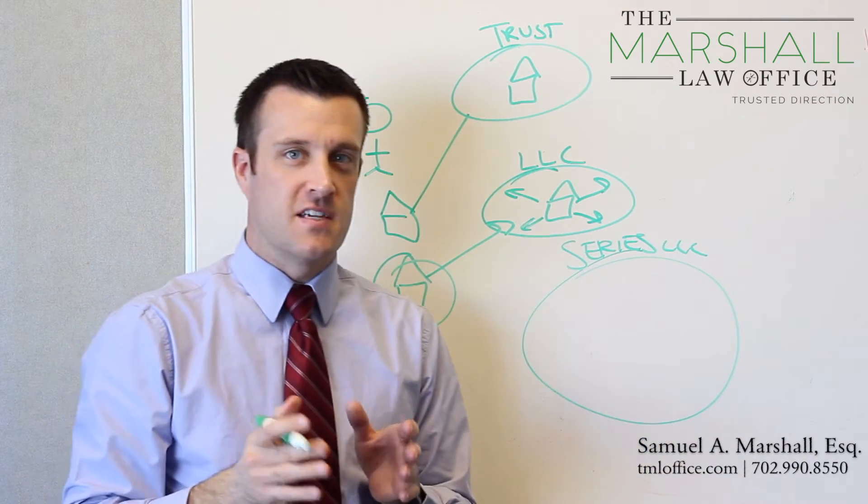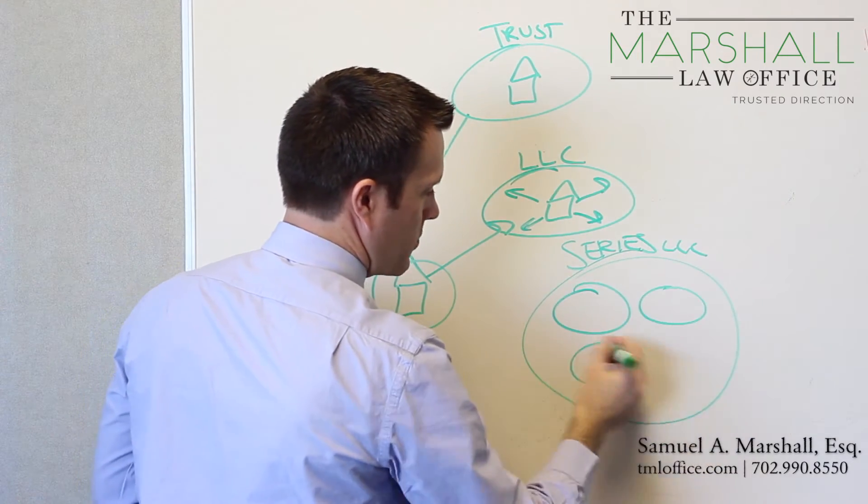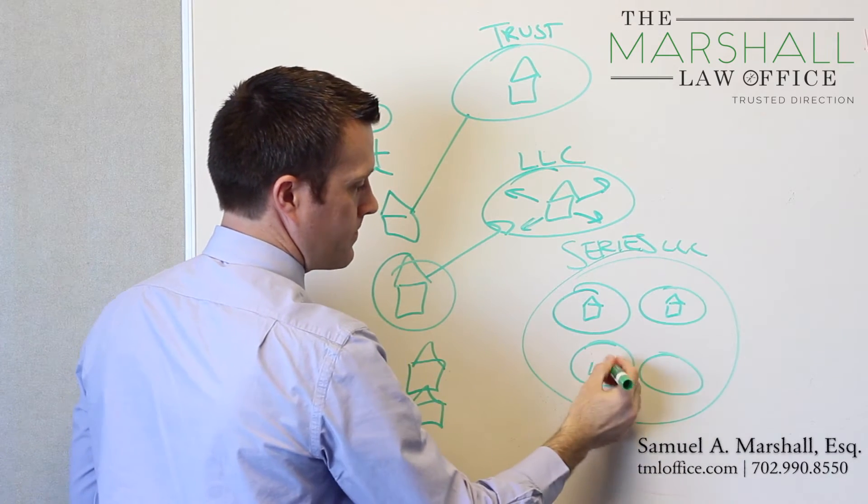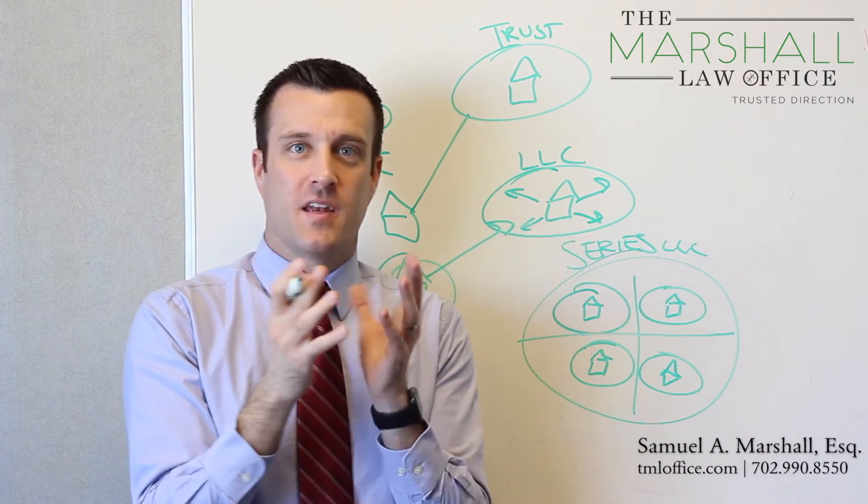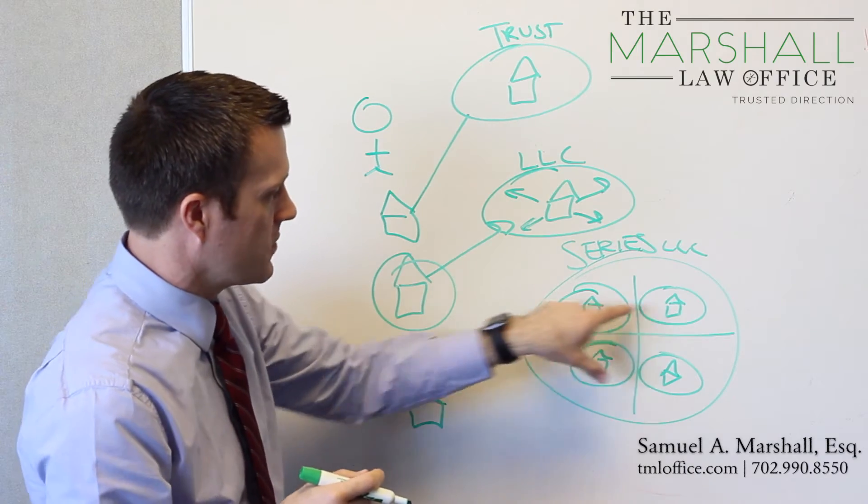And that series LLC can be subdivided into different cells or series. So let's say that you have four rental properties. You put those rental properties in separate series. And those rental properties are within kind of like an LLC. But it's all one LLC, and they're different series.